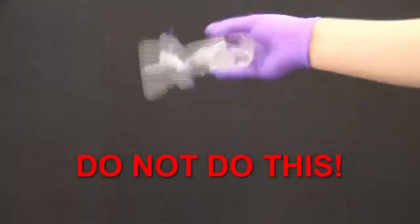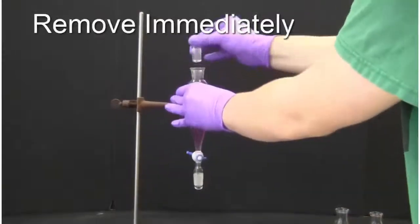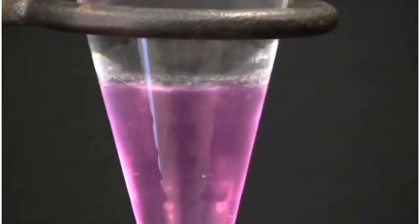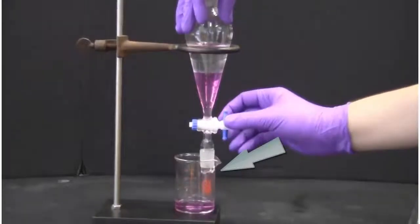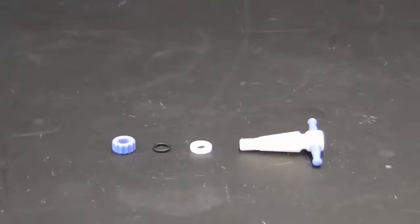The separatory funnel is placed in the iron ring stand with the stopcock at the bottom of the funnel in the closed position. Double check your stopcock before adding liquids to avoid leakage. The stopcock is closed when the valve is perpendicular to the neck.